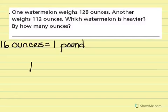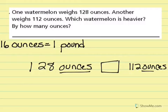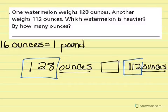If one watermelon is 128 ounces, and the other one is 112 ounces, I'm comparing ounces to ounces. They're the same measurement. So then, I just look at the numbers and think, is 128 bigger or smaller than 112?